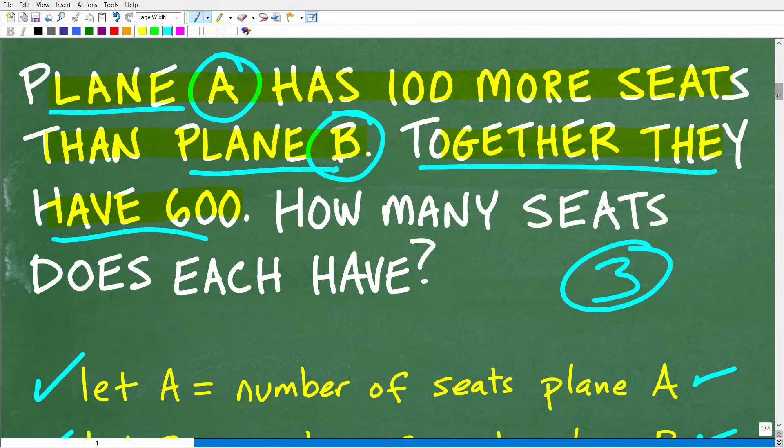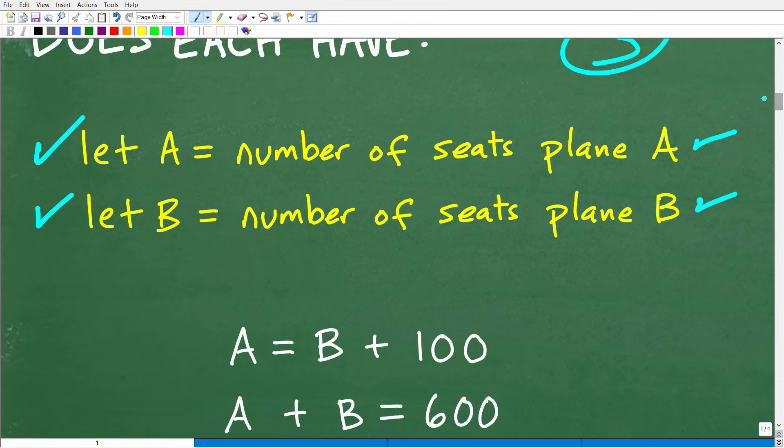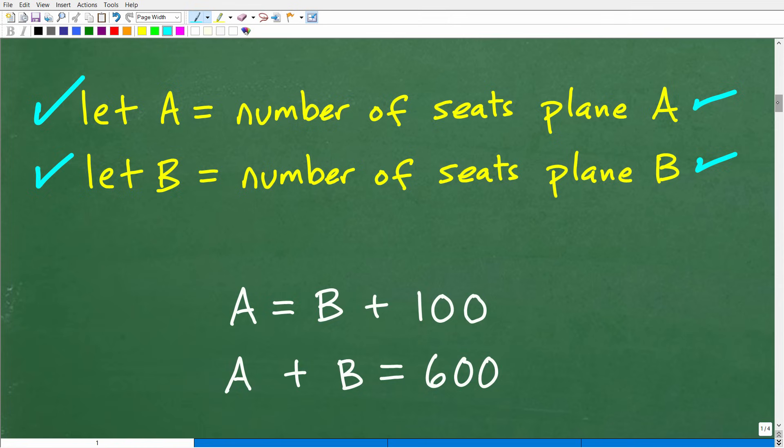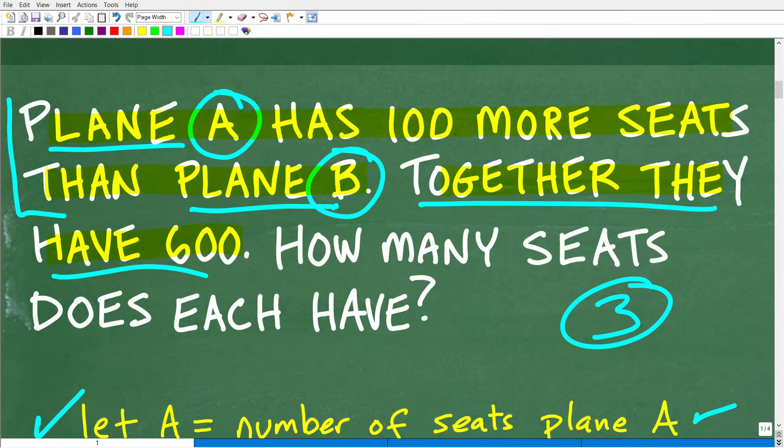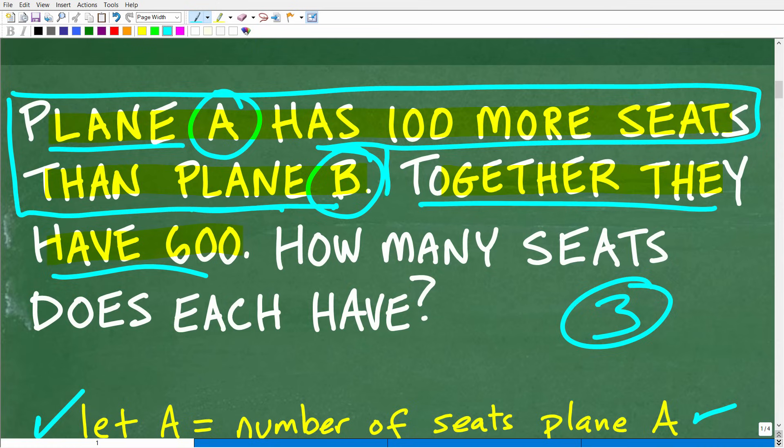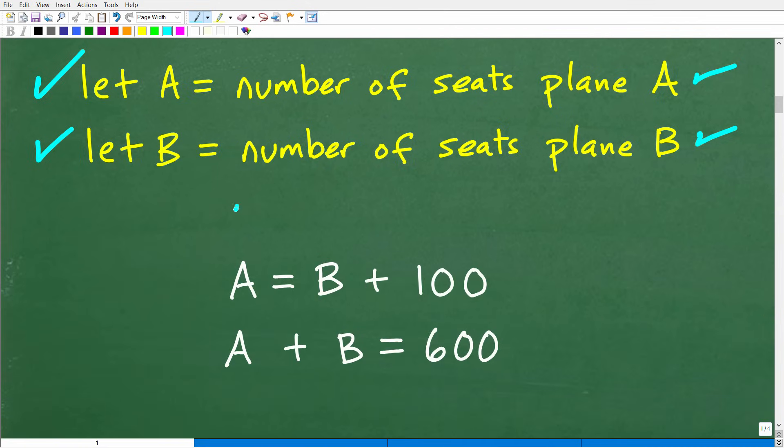So let's go ahead and build these equations. Plane A, let's go back here and interpret this. Plane A has 100 more seats than plane B. Now we have to be very careful here. Plane A has 100 more seats than plane B. So how can we write that? Plane A has 100 more seats than plane B. So you have to be really careful because oftentimes people will put B is equal to A plus 100. Whatever you do, when you write an equation, you have to look at it and make sure that you wrote the equation correctly that reflects the information in the prompt. So plane A has 100 more seats than plane B.